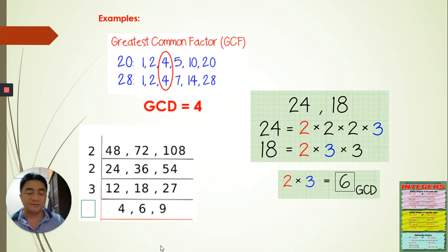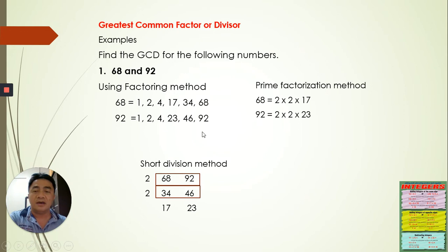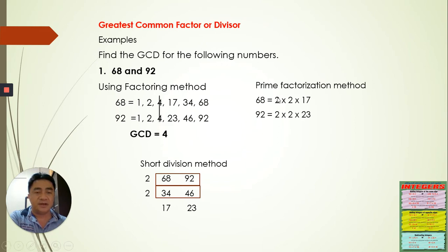For the short division example, we get 12. Looking at the other example using the factoring method, we just write all the factors, choose the common factors, and that gives us the greatest common factor, which is four. For the prime factorization, we identify the prime factors and multiply the common ones — that also gives us four.